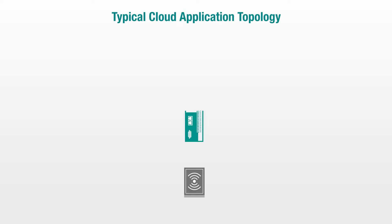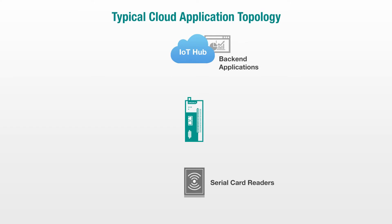A typical cloud application topology for serial device data acquisition includes several key elements: the serial devices in the field, the IoT hub or platform of your preferred cloud service, the back-end application that visualizes the collected data into a dashboard, and the IoT gateway that links the serial devices to the cloud.